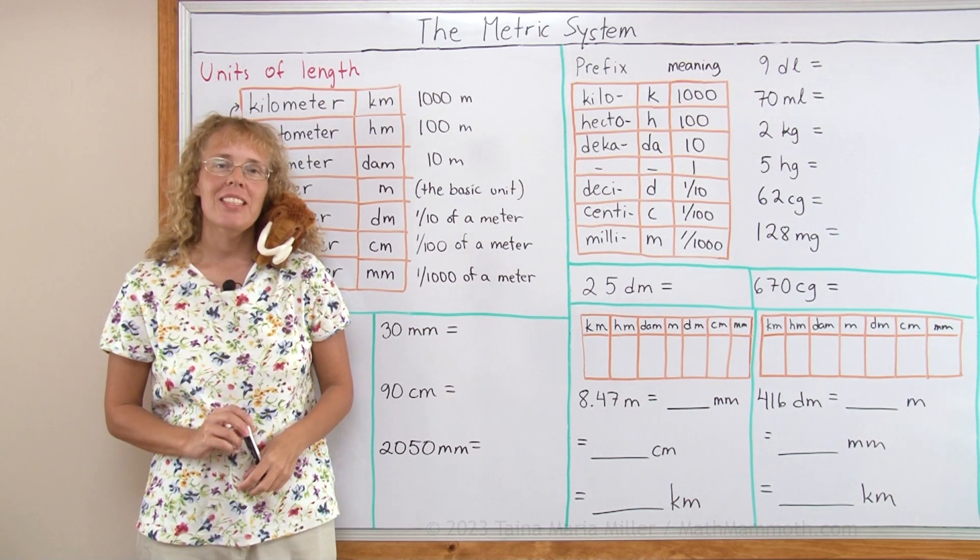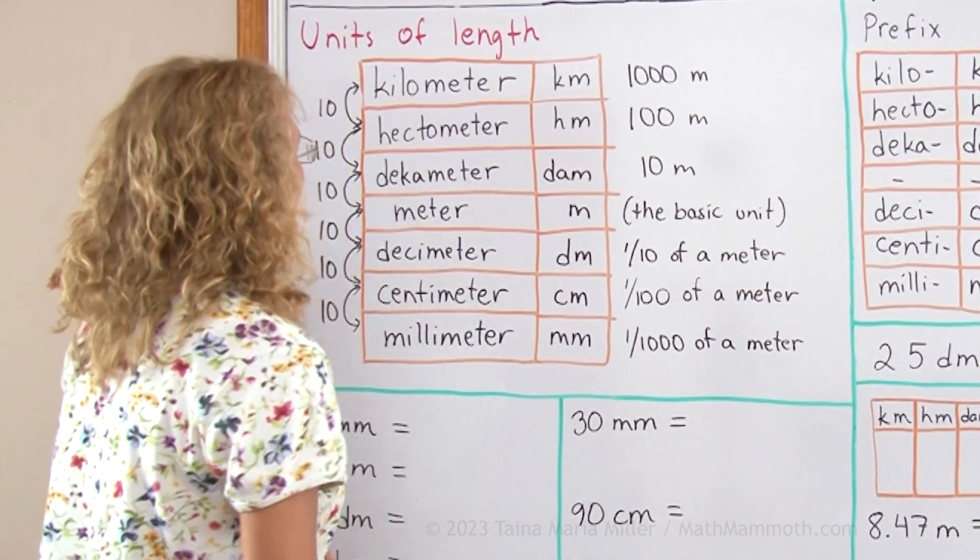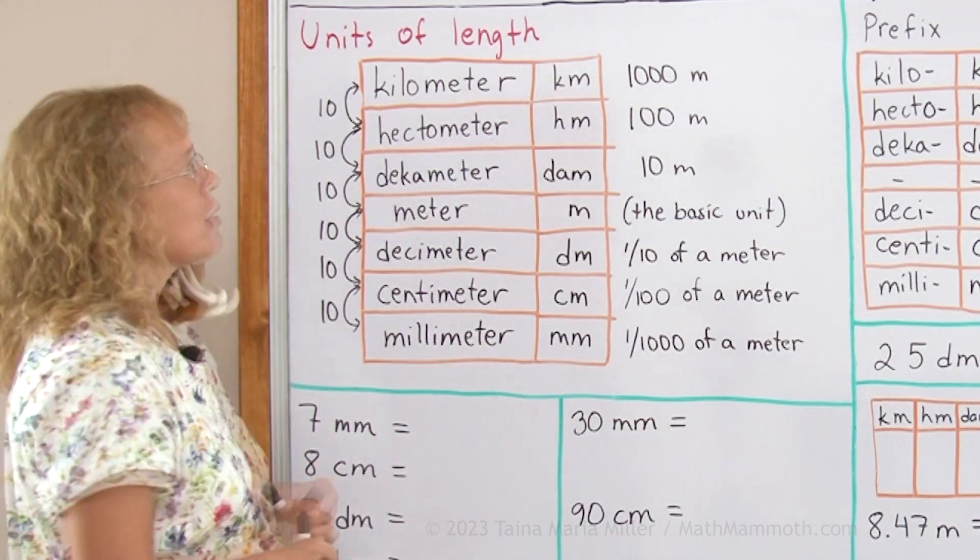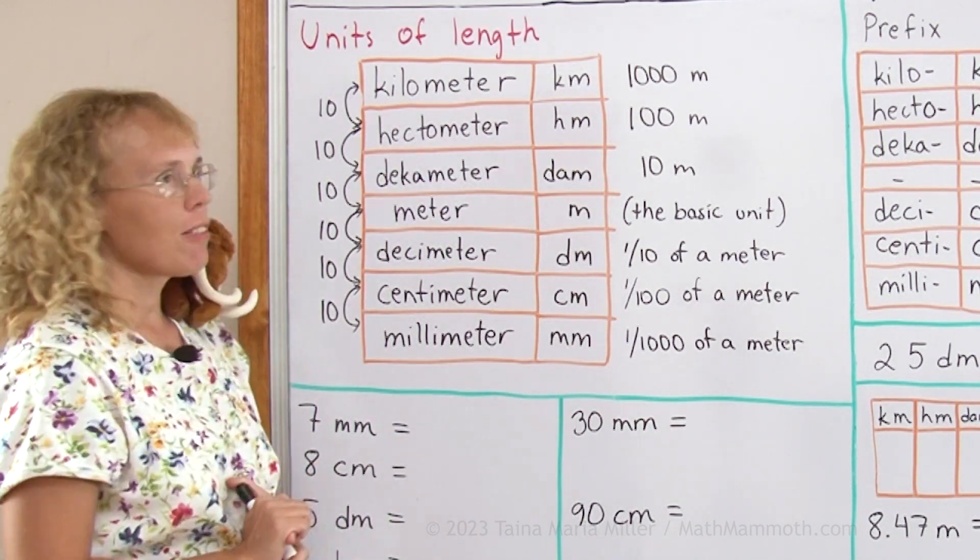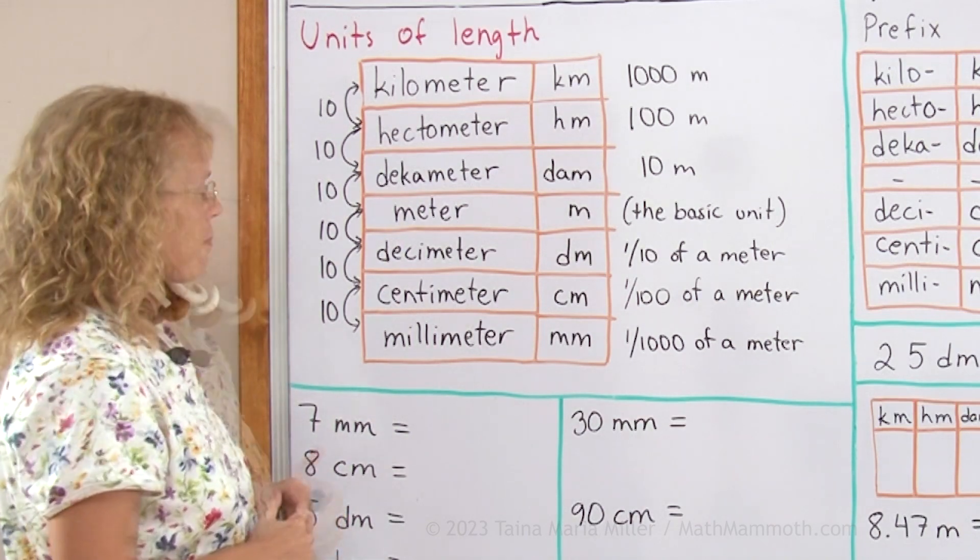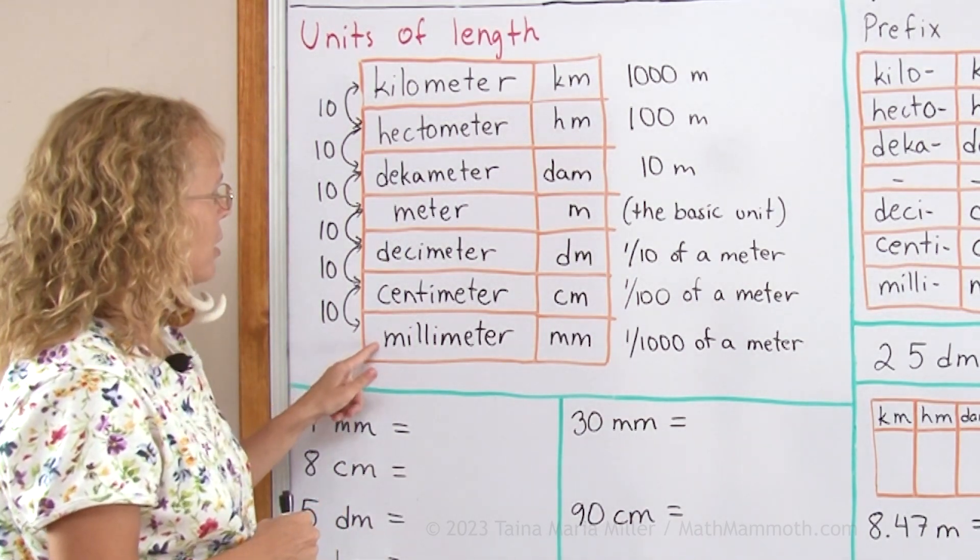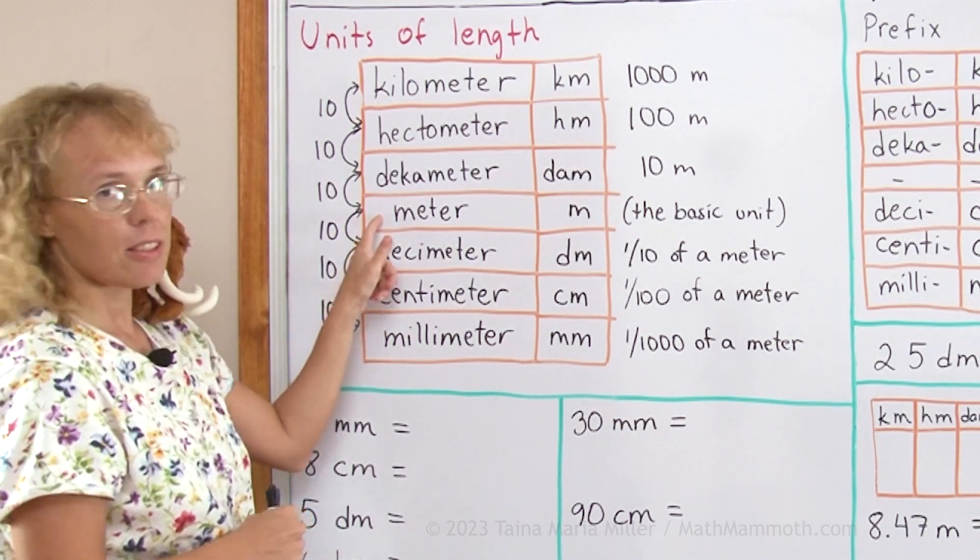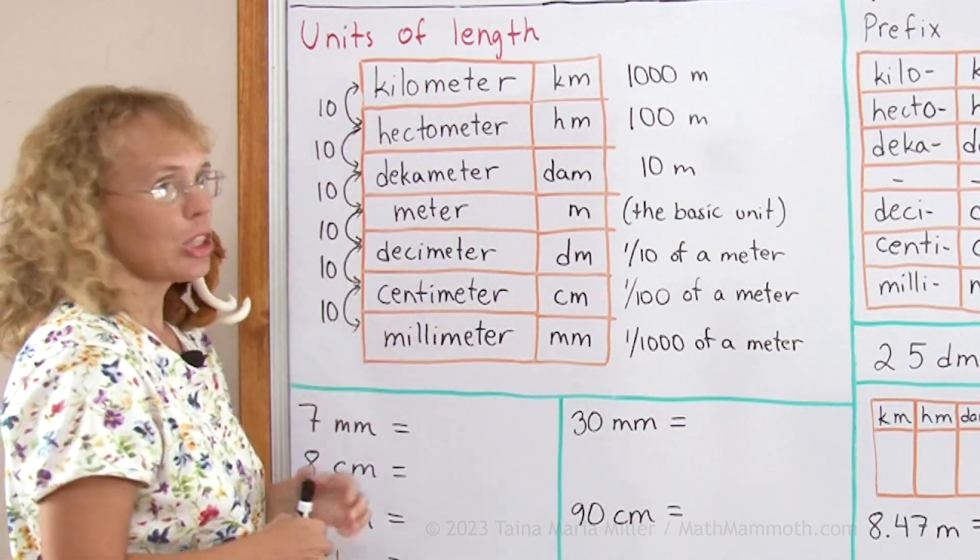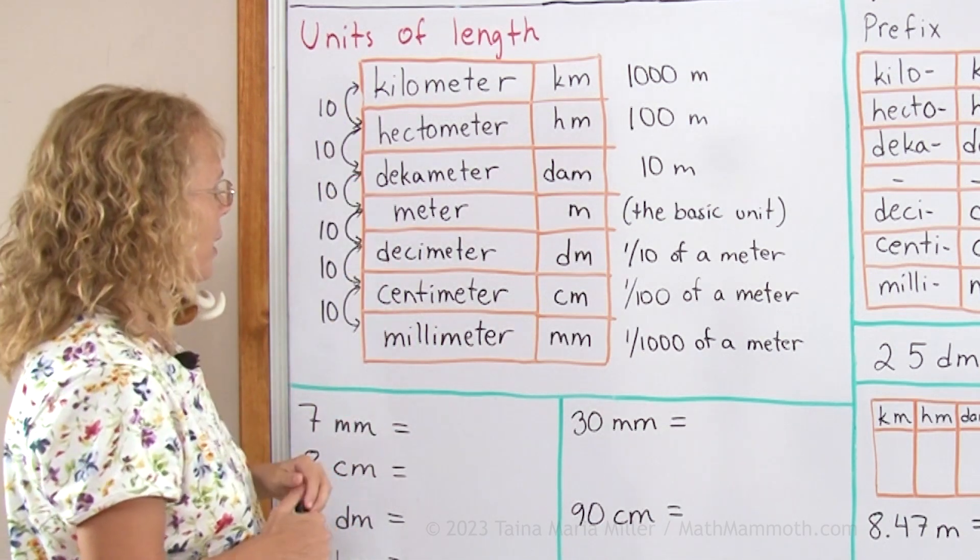In this lesson we're going to study the metric system. And I wrote here a very important table for you to study. It has metric units of length, the ones we are using most often, and a few others. You are probably familiar with millimeters, centimeters, meters and kilometers. But did you know that there are a few other units too that are in between?